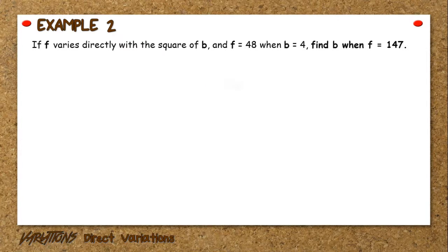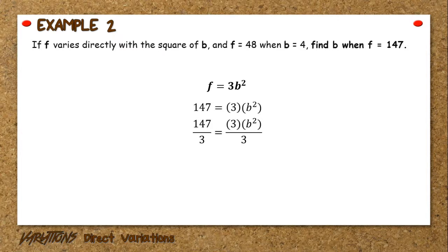Using the equation f equals k times b squared, substitute the value of the proportionality constant, which is 3, and the value of f, which is 147. It will be 147 equals 3 times b squared. Divide both sides by 3, resulting in b squared equals 49. Take the square root of both sides, then b will be positive and negative 7.